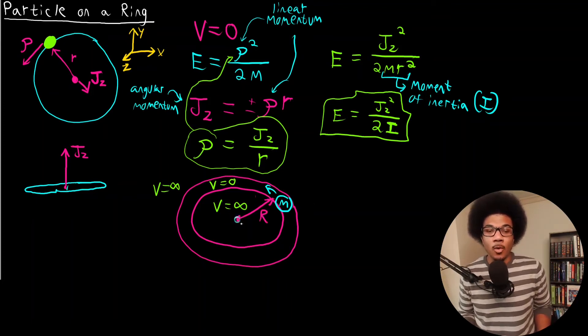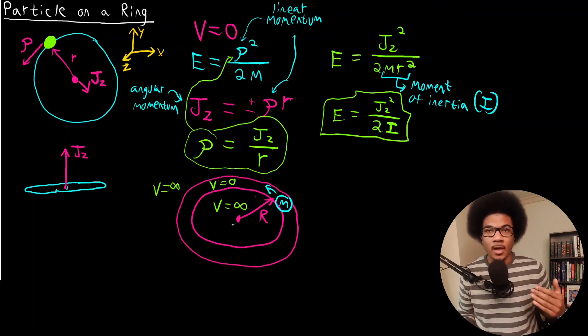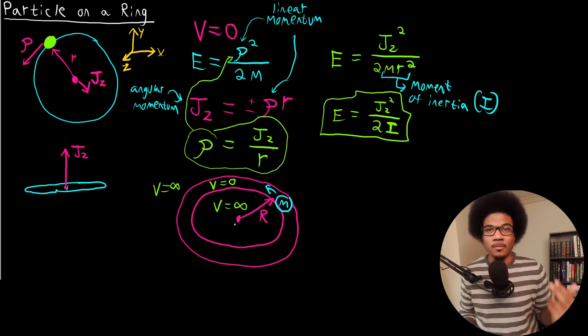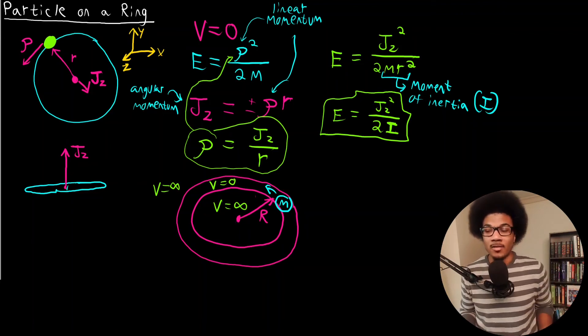In the next video, we're going to take this quantum problem and start to look at what the wave function is going to be, what the form of the Hamiltonian is, and what the energy expression is going to be for the particle on a ring.